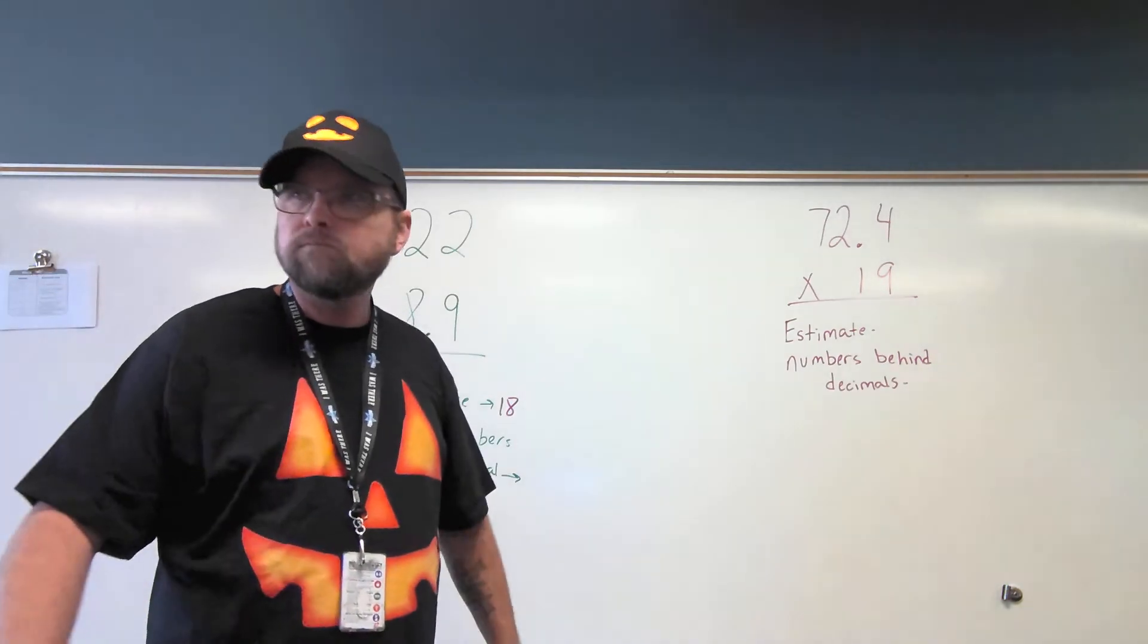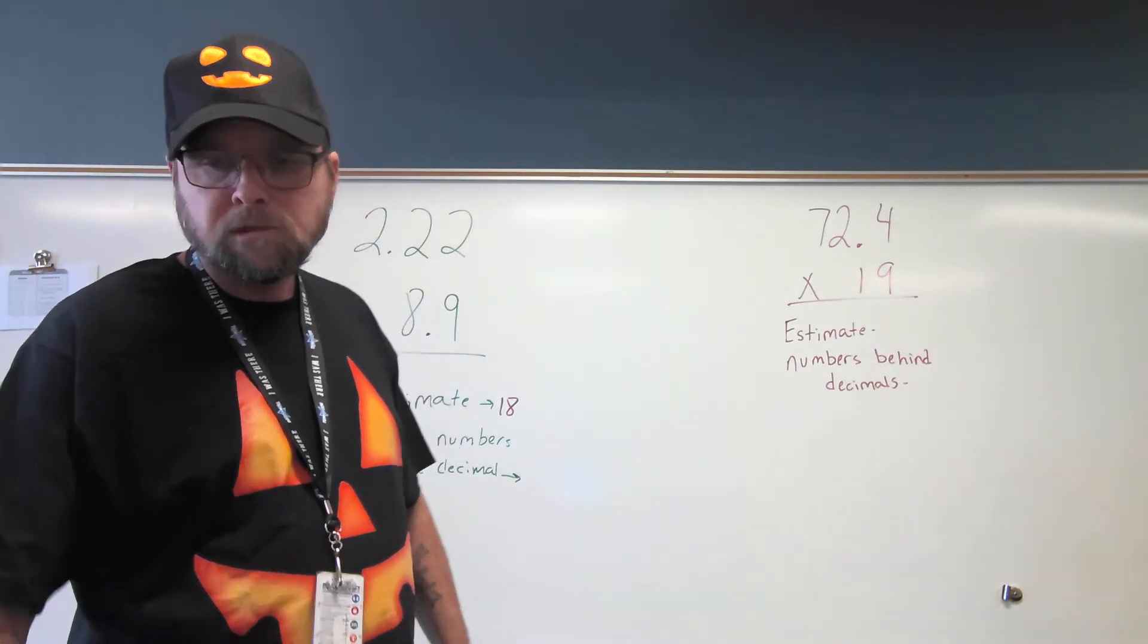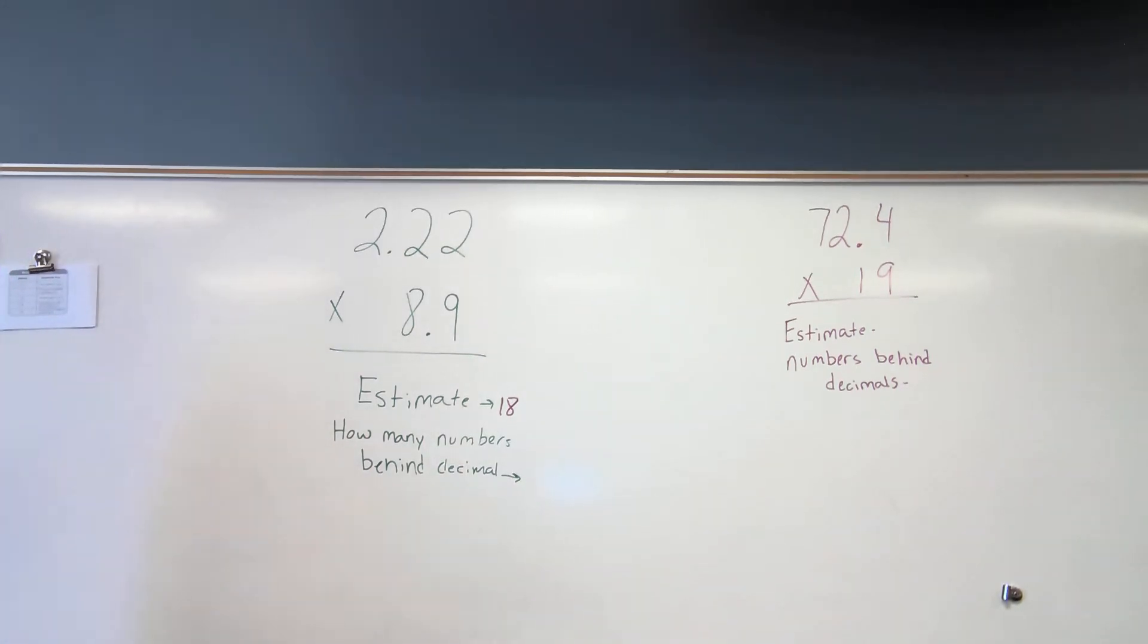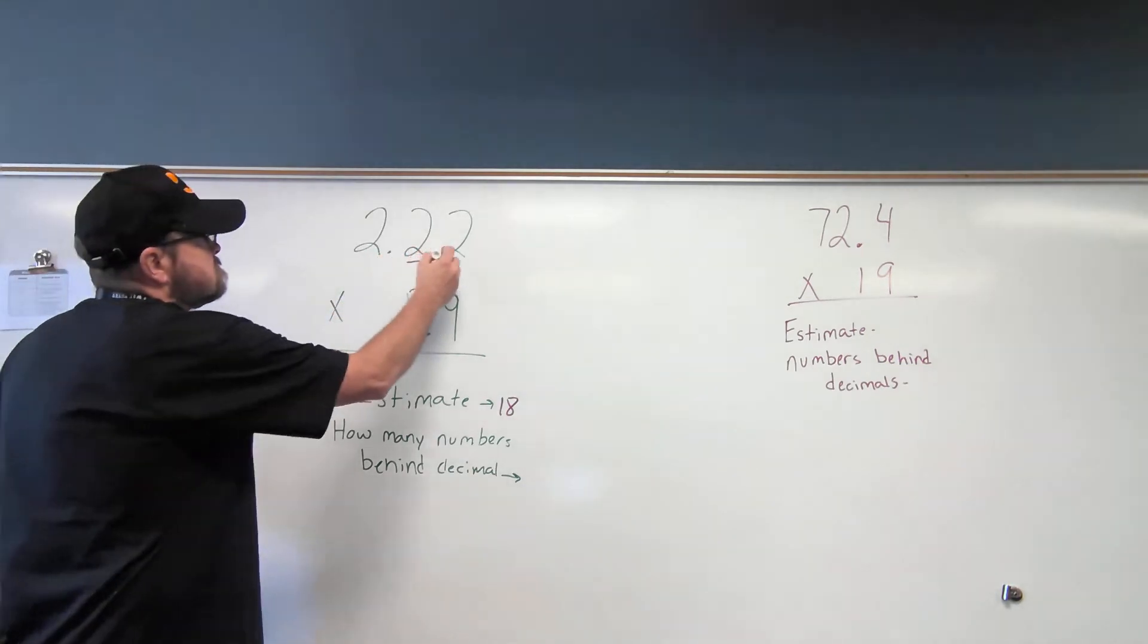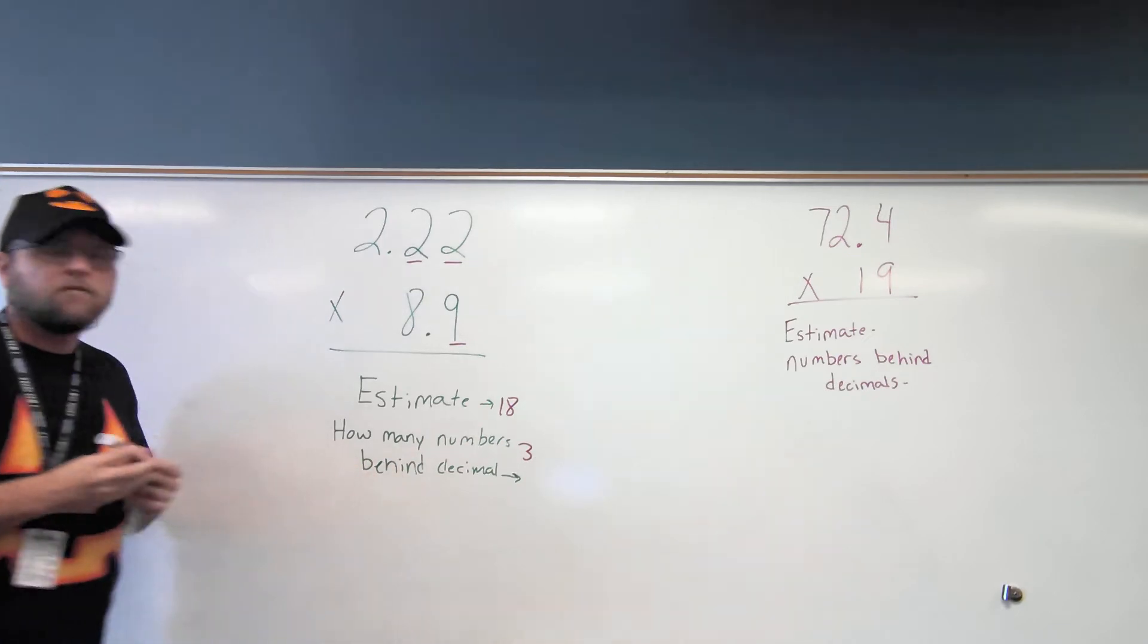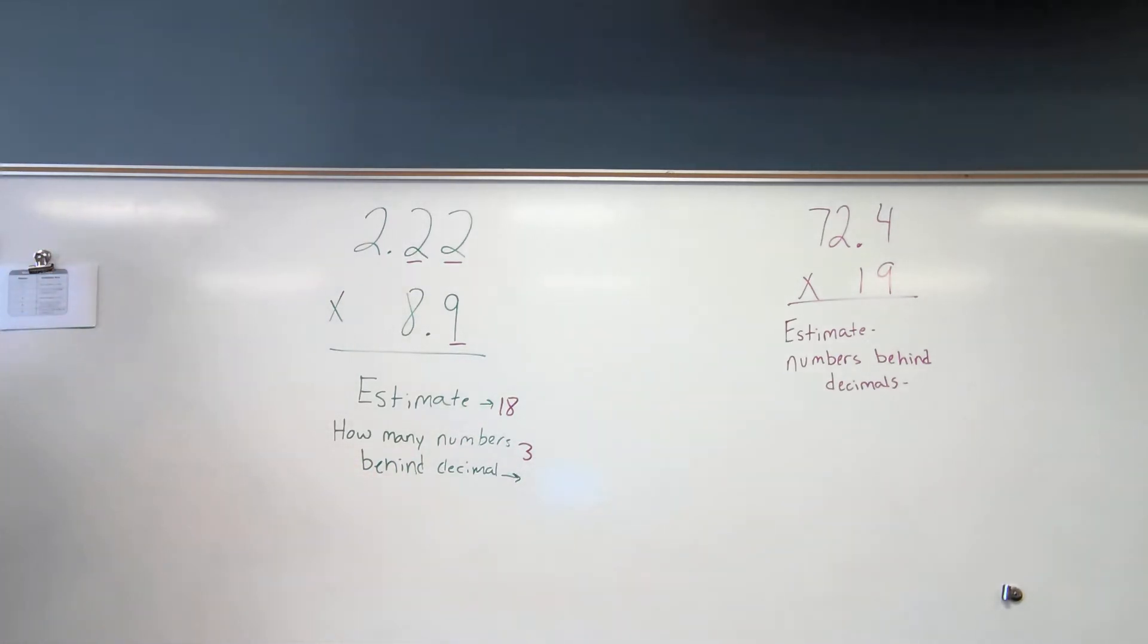Come around here, boy. I'll tell you what. Manasi, how many numbers are going to be behind the decimal in my answer? Three. Three. Three numbers behind the decimal in my answer. Because there are three numbers behind the decimal in my problem.